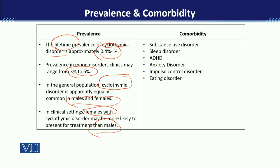Now we will talk about comorbidity. The comorbidities found in children and adults include substance use disorder and sleep disorder.